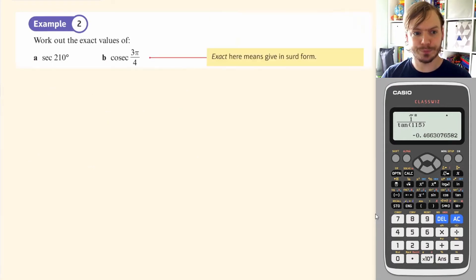Example 2 says work out the exact values of. So that tells us, it suggests to us straight away that these are these neat values, either 30, 45 or 60 degrees, which if you remember is pi over 6, pi over 4 and pi over 3 radians. So those are our key values that we're kind of hoping for.